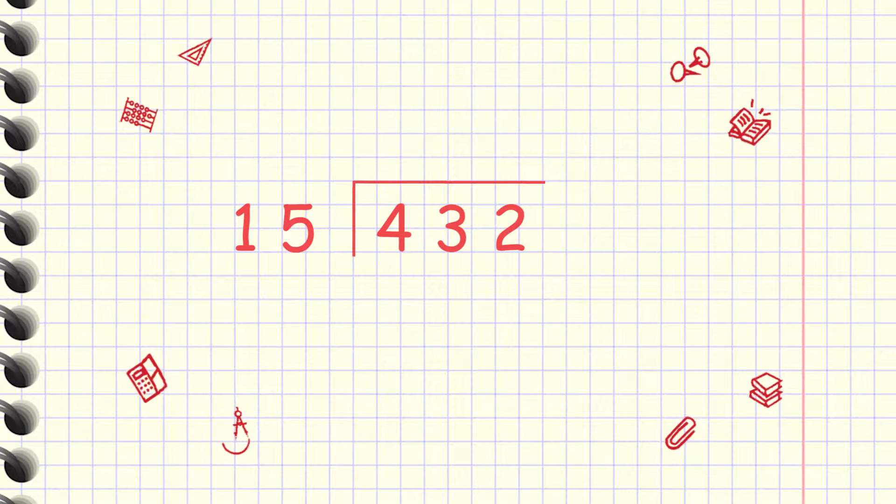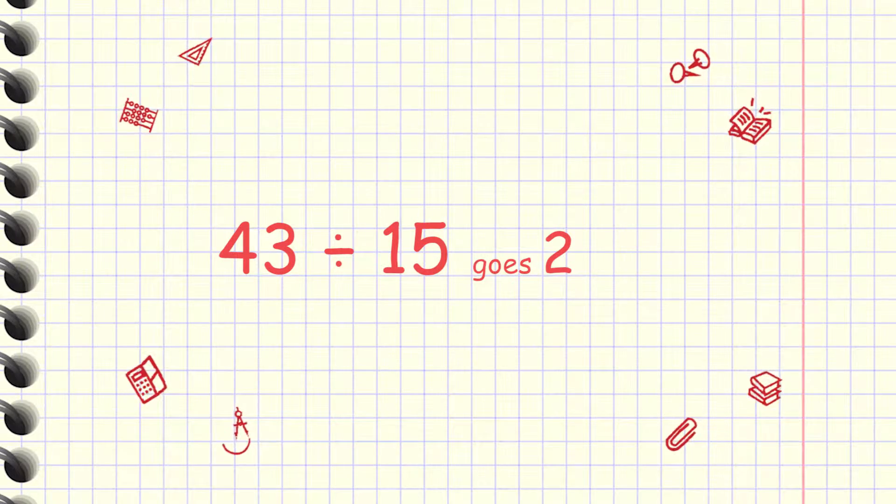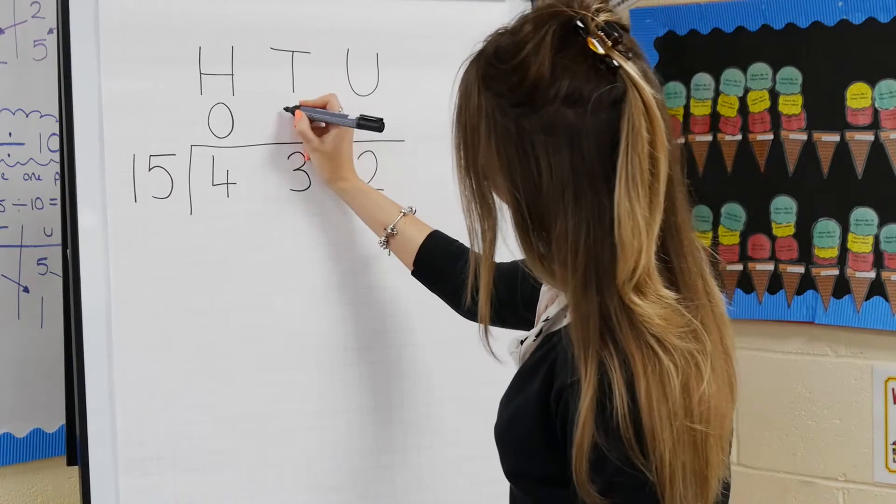So now we need to look at the number as 43 tens. So 43 divided by 15 goes twice. Put the two above the line in the tens column.